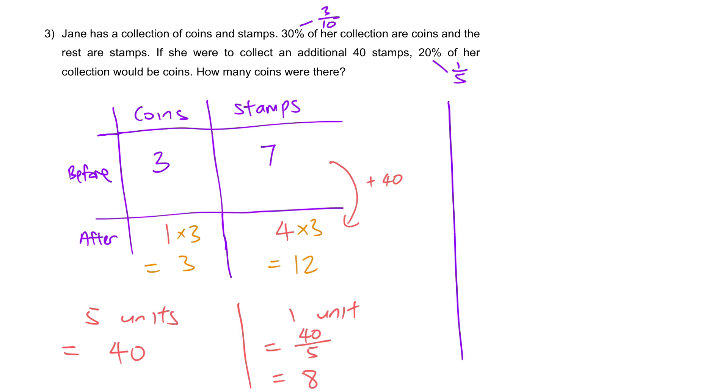Next, how many coins were there? Well, 3 units of coins. Number of coins there were, which is 8 times 3, 24.